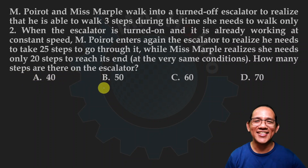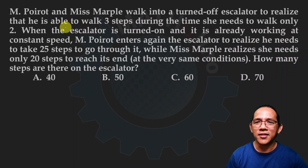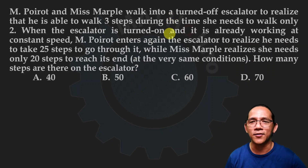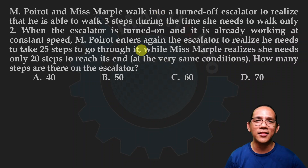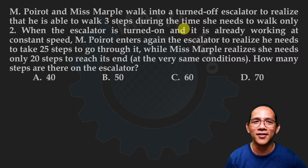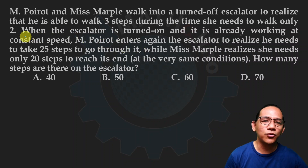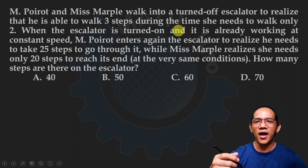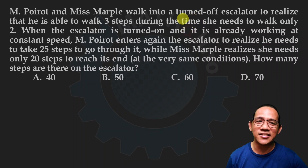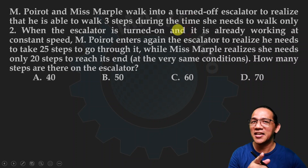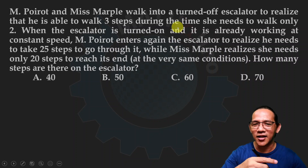The first sentence defines their velocities or walking speeds on the turned-off escalator. We are talking about the same unit of time — it's not specified whether it's hours or seconds — but in the same time, M. Poirot can make three steps while Ms. Marple can make two steps. To avoid losing generality, let's call this time unit 'seconds' — so three steps per second. You could make it three steps per hour; it doesn't matter. It won't break the relationship in the equation.